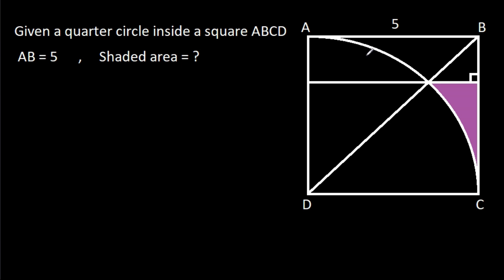In this video, we have been given a quarter circle inside a square ABCD and AB is 5. We have to find the shaded area.